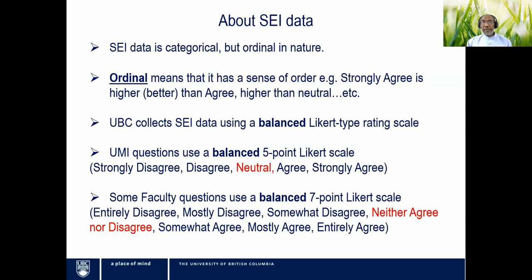The Student Experience of Instruction data is categorical and ordinal in nature — the categories have a sense of order. On a five-point scale, strongly agree is higher than agree, which is higher than neutral, and so on. At UBC, we collect this data using a balanced Likert-type rating scale. A balanced scale has an equal number of favorable and unfavorable responses, which may or may not include a neutral response.